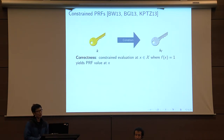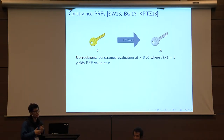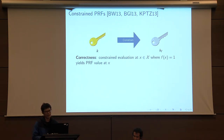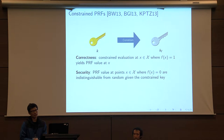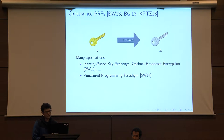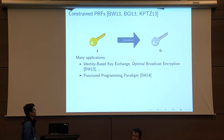For correctness, we require that PRF evaluation using the constraint key at points x where f(x) equals one should yield the correct PRF evaluation at x. For security, we require that PRF evaluations at points x where f(x) equals zero should look indistinguishable from random to an adversary given the constraint key. Constraint PRFs are very useful in cryptography with many applications — for instance, constructing identity-based key exchange and optimal broadcast encryption schemes.